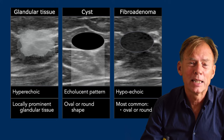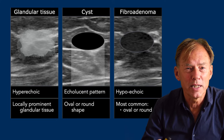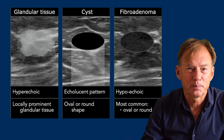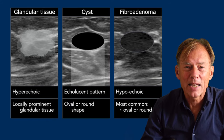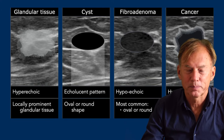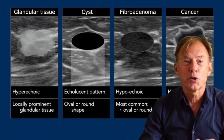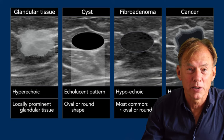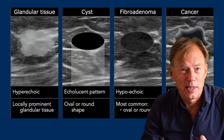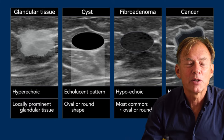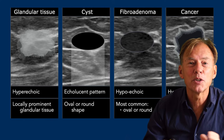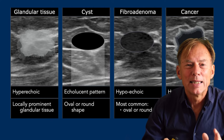A fibroadenoma is the most common tumor in the breast and it is always benign. It is most commonly seen in young women especially in the age group 15 to 25 years and seldom in women over 50. It is hypoechoic and has a regular shape with sharp borders. Finally, breast cancer is mostly seen in women over 50 years of age. It is also hypoechoic but usually has an irregular shape. Our job is to determine first if a lump is normal glandular tissue; if not, is it a cyst; and if not, is it a benign tumor or breast cancer. In most cases this is straightforward.